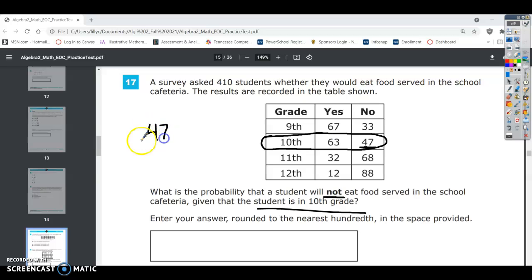So we're going to do 47 out of 63 plus 47. So 6 and 4 is 100, and then an extra 10, so that's 110. If you take your calculator, 47 divided by 110 is 0.42727.